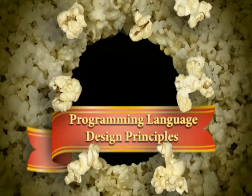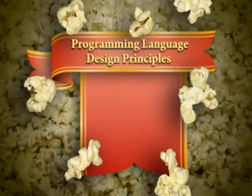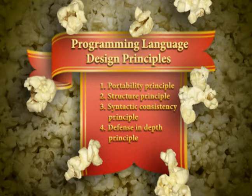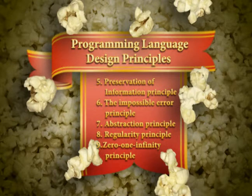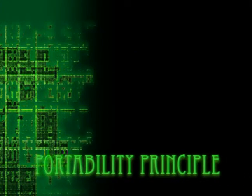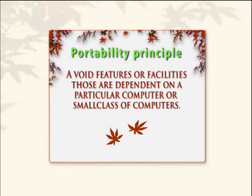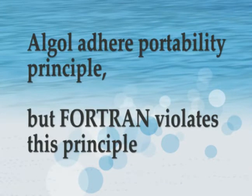Comparing Fortran and ALGOL through programming language design principles: the principles are portability, structure, syntactic consistency, defense in depth, preservation of information, the impossible error principle, abstraction, regularity, and zero-one-infinity. The portability principle states: avoid features dependent on a particular computer or small class of computers. ALGOL adheres to the portability principle, but Fortran violates it — for example, Fortran's input/output functions are machine-dependent, while ALGOL is almost completely machine-independent.